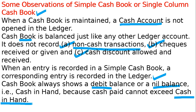Cash book is a subsidiary book and it is just like a cash account. This cash account — just change the name from 'account' to 'cash book'. The cash book is nothing but a cash account. If you maintain a cash book, you do not write a cash account in the ledger; its balance goes directly to the trial balance.